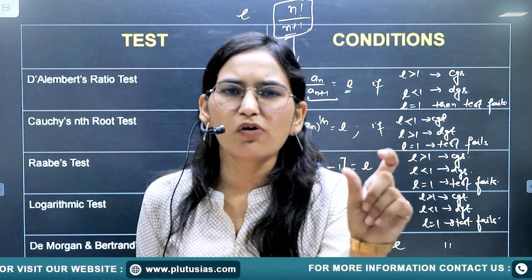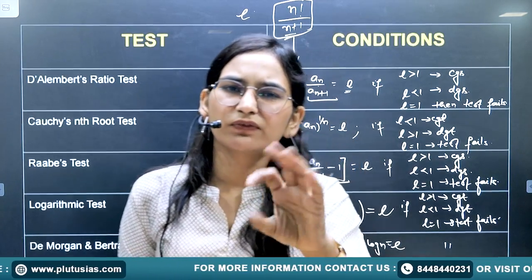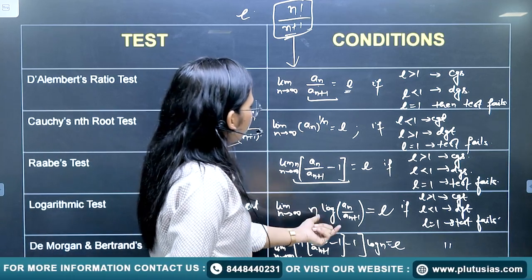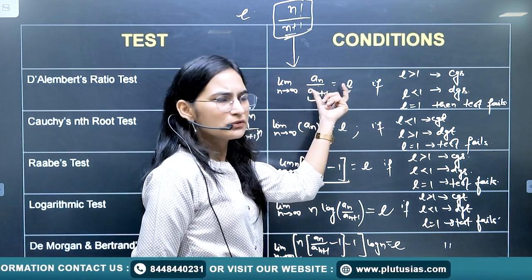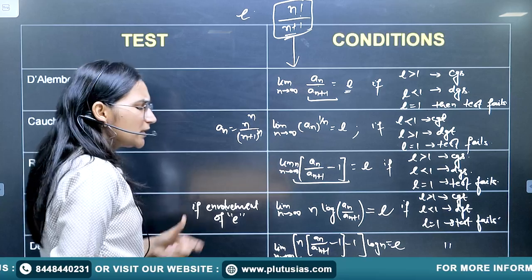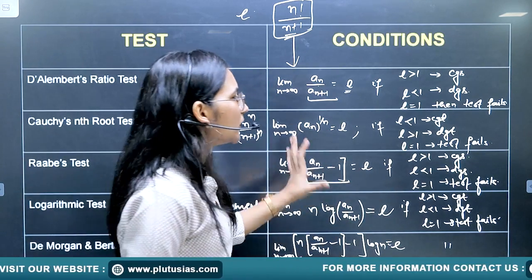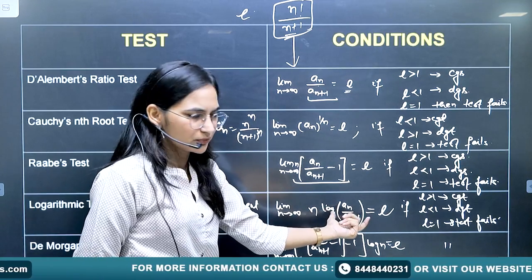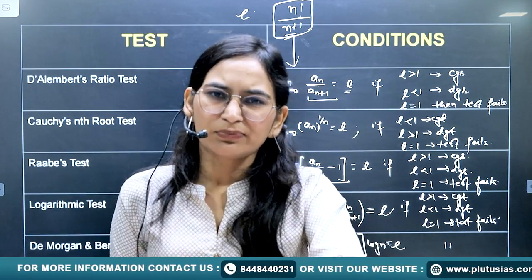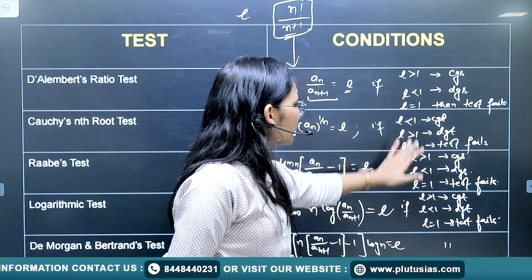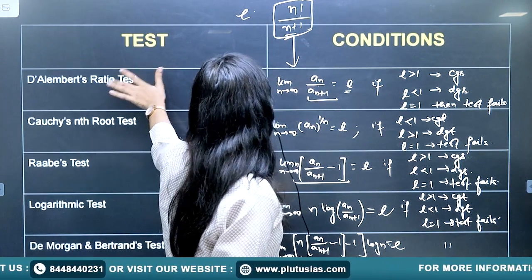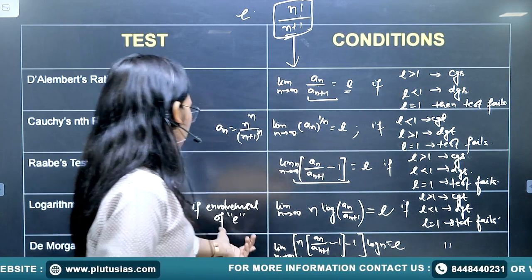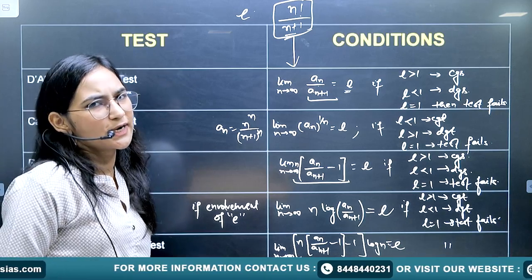If e is involved and D'Alembert's Ratio Test fails, we apply the Logarithmic Test. As the name suggests, take the log of the ratio a_n / a_{n+1}, multiply by n, and take the limit. The conditions remain the same: l > 1 means convergent, l < 1 means divergent, and l = 1 means the test fails.